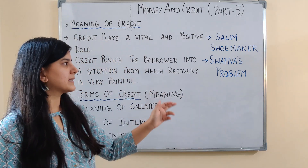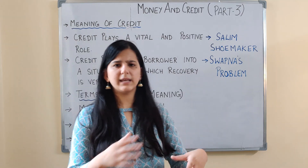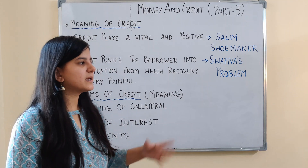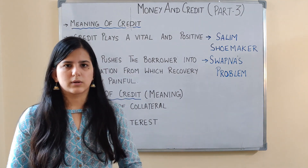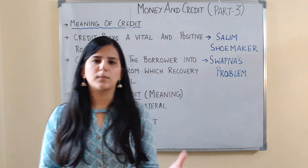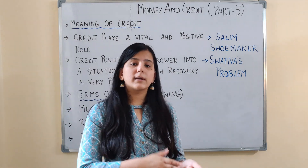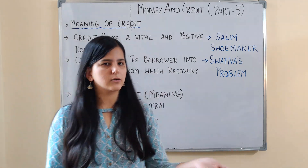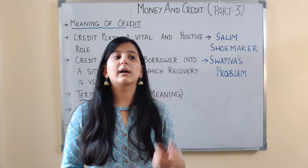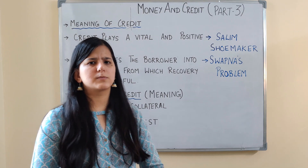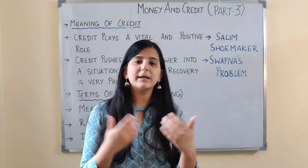Our second example is Swapna's problem. Swapna was a small-scale farmer who grew groundnuts on three acres of land. She took a loan from a moneylender to fund her farming. However, during the season, the crops were attacked by pests. Even though she used expensive pesticides, she could not save her crops and the crop failed. Because the crop failed, she did not have money to pay back the moneylender.